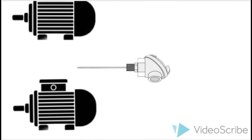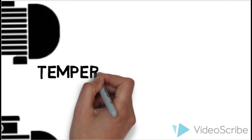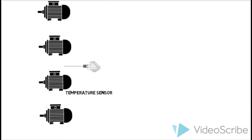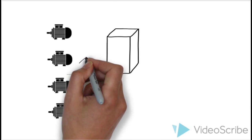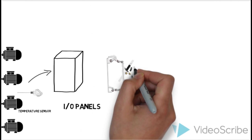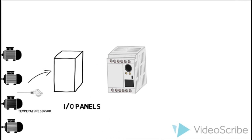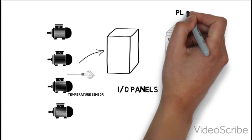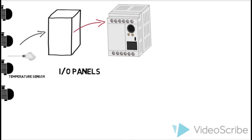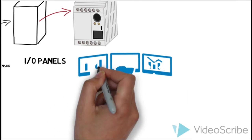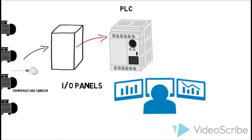Let us see a current scenario of traditional industrial automation. As you can see, a temperature sensor is connected to the I/O panels. And I/O panels send data to the PLC. PLC is controlled and monitored by SCADA.